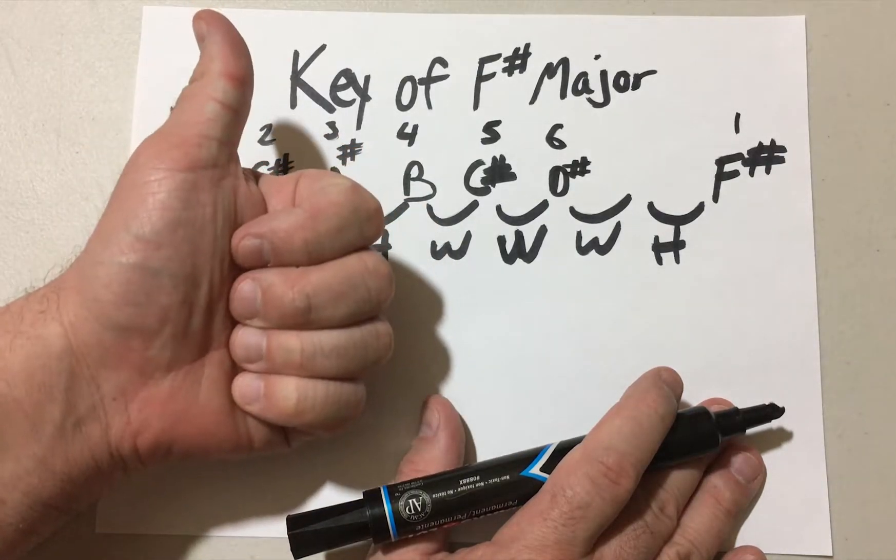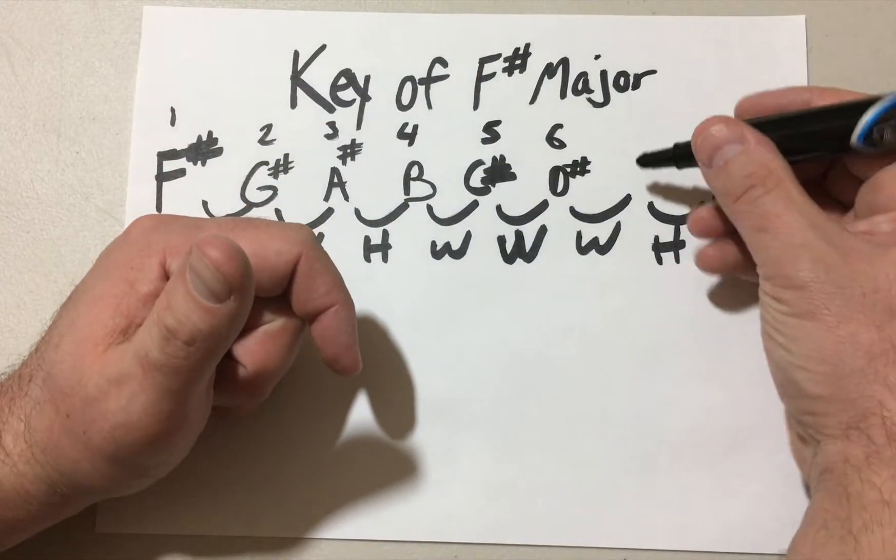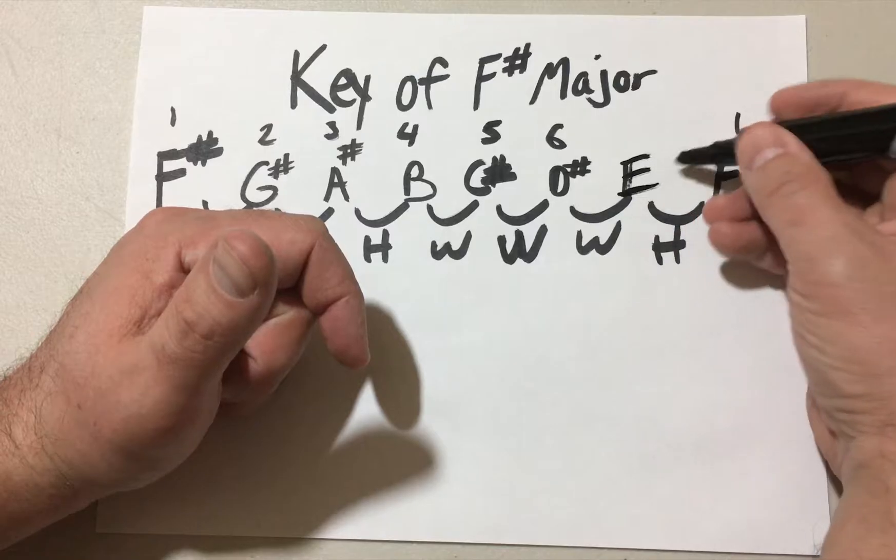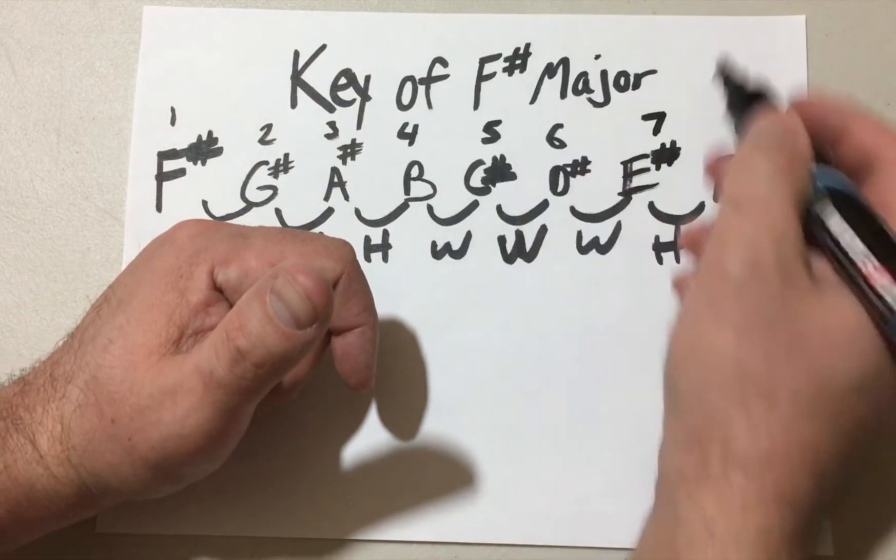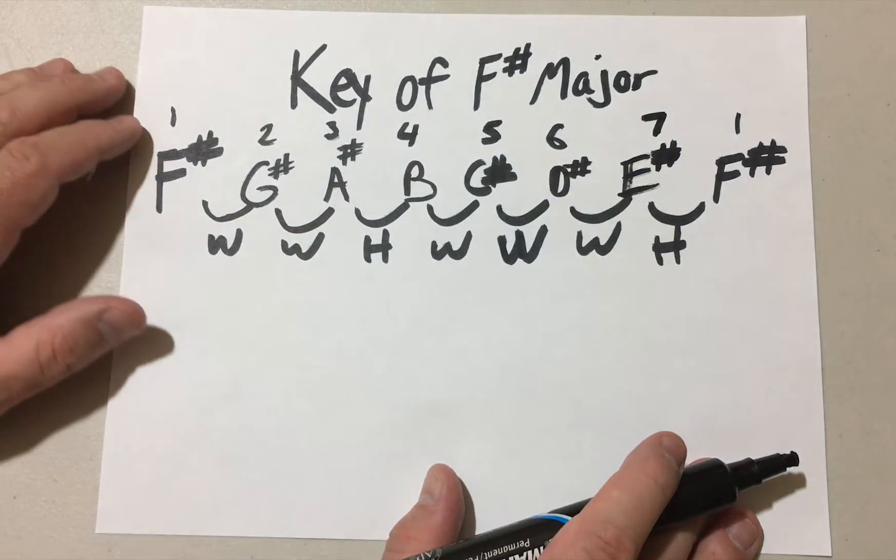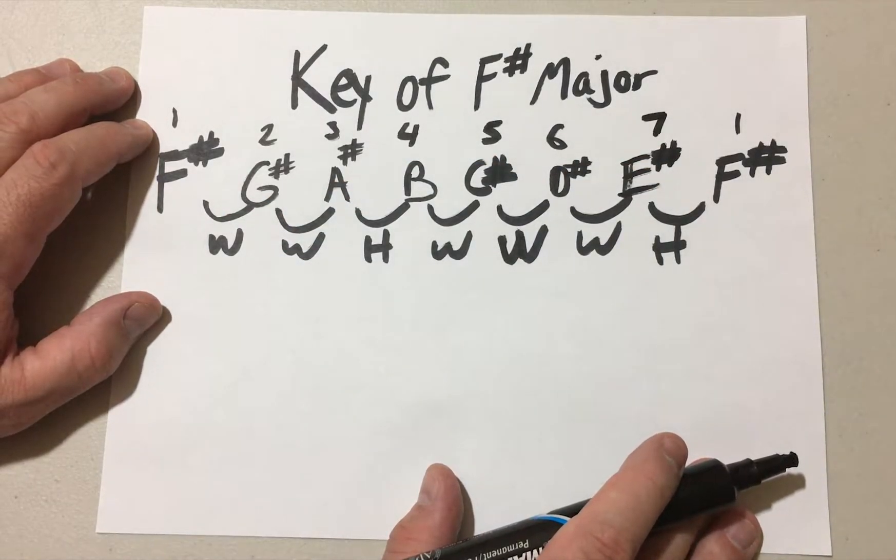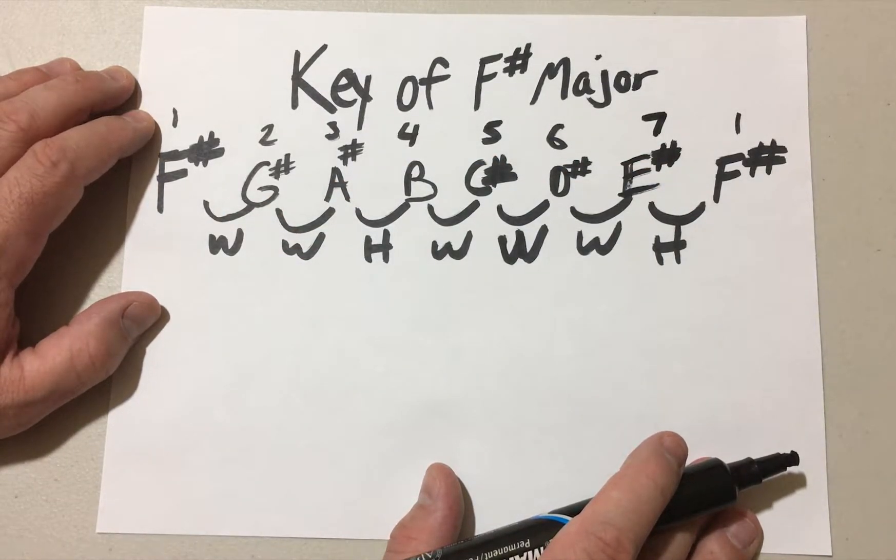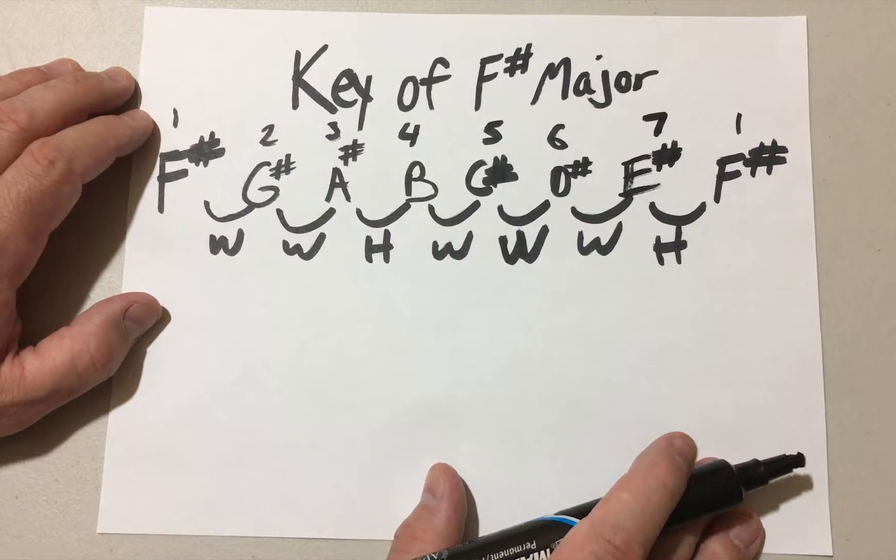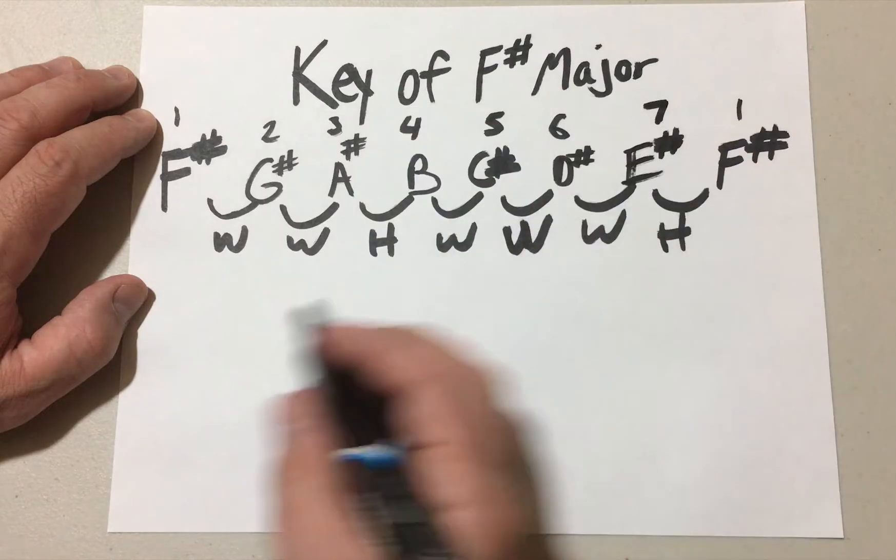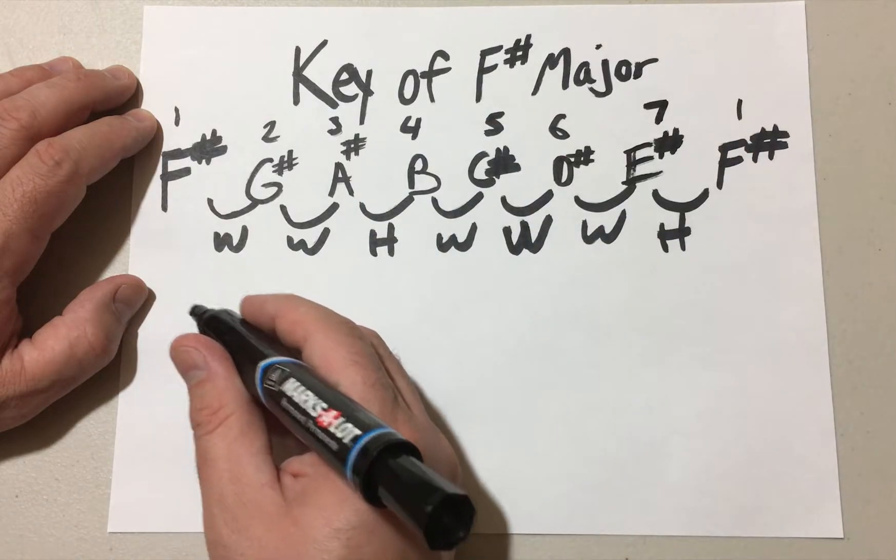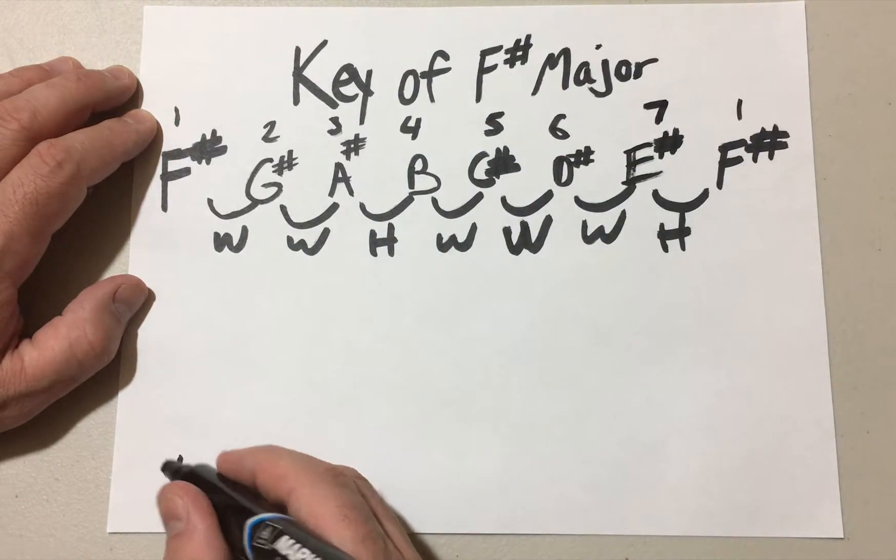We can't go from D to F, it has to be an E. So this leaves us with a dilemma where we have to call this D to E, E to E sharp. Okay, very confusing, but if we're in the key of F sharp major, we have to call the seventh degree an E sharp, even though there is no such note. E sharp is actually F.